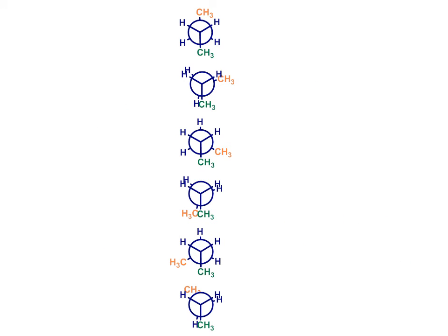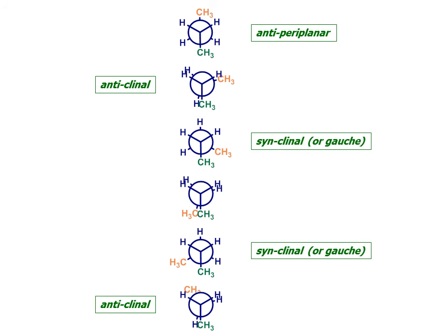You won't be surprised, given how much organic chemists like naming things, to hear that each of these different conformations has its own name. When the methyl groups are 180 degrees apart, as far away from each other as possible, we call this the anti-periplanar geometry. When the methyl groups are 120 degrees apart, each eclipsing a hydrogen, we call this geometry anti-clinal, and there are two of these. When the methyl groups are 60 degrees from each other, this staggered conformation is known as synclinal. Again, there are two of these, which are also sometimes called gauche. And the conformation in which the methyl groups eclipse each other is known as synperiplanar.